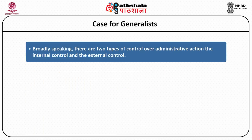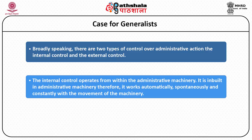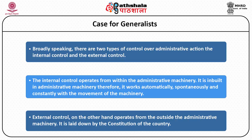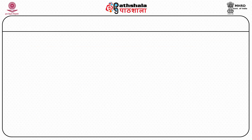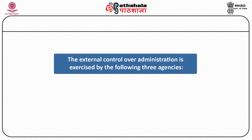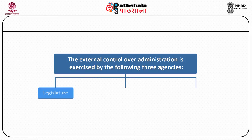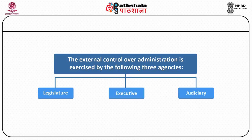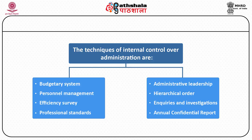Broadly speaking, there are two types of control over administration: internal control and external control. Internal control is inbuilt in the administration and moves with the administrative machinery. External control is exercised through three agencies — the legislature, the executive, and the judiciary. A fourth type, of recent origin, is control through lokpals.